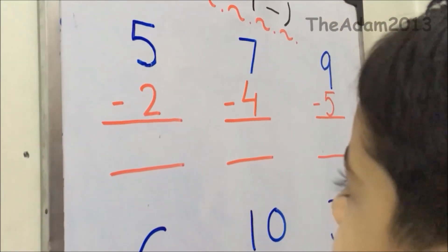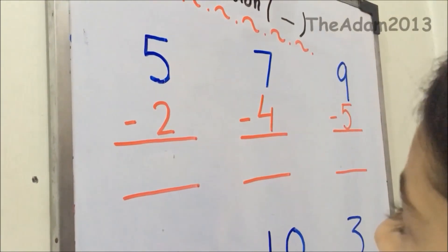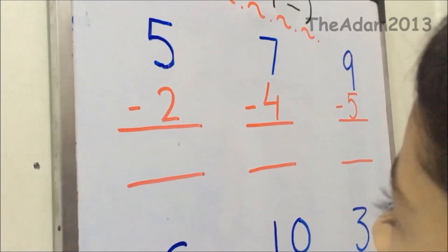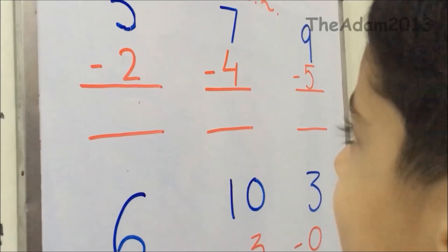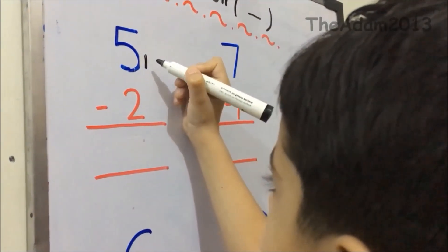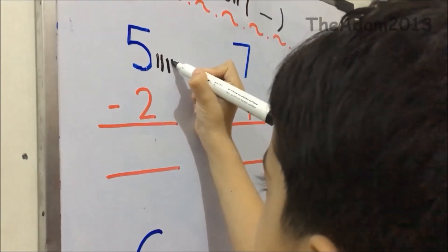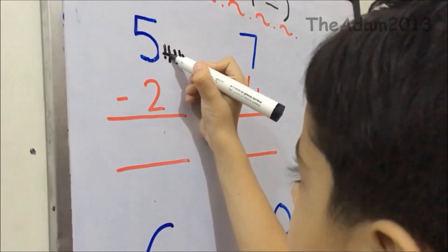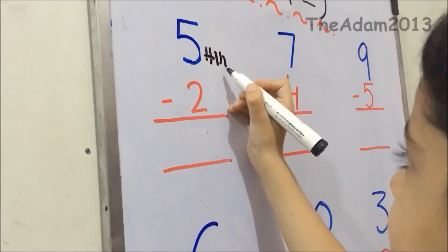Friends, here is five and we will put five lines. We will draw two lines and cross them out on the map, and three lines will remain. We will draw three lines — the answer is three.